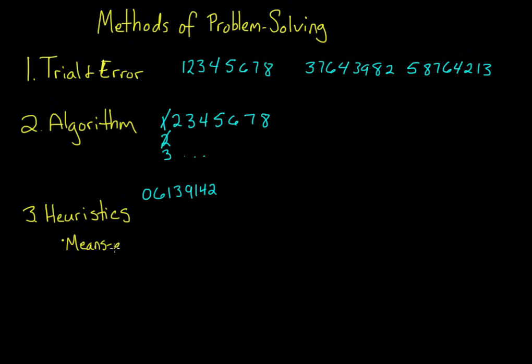One type of heuristic is means-end analysis. This heuristic means that we analyze the main problem and break it down into smaller problems. Then we attack the biggest sub-problem in order to reduce the most difference between our current state and the goal state.